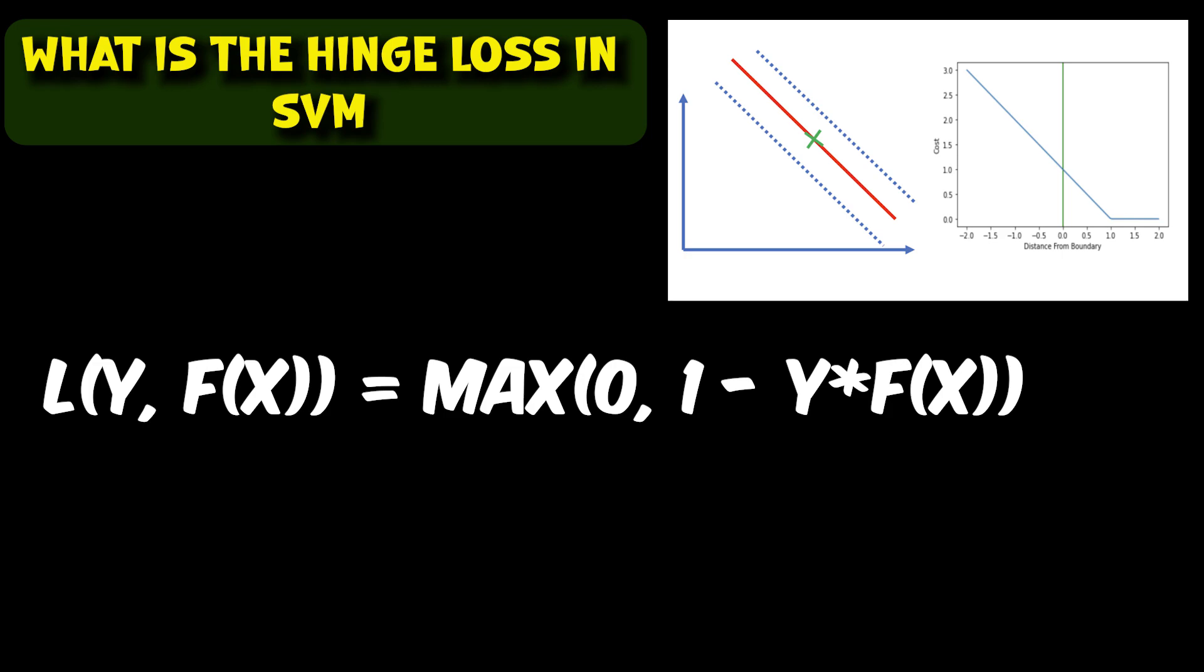A value close to 0 indicates a point that is very close to the decision boundary, and a negative value of y times f(x) indicates a misclassified point.